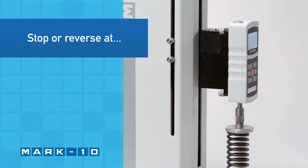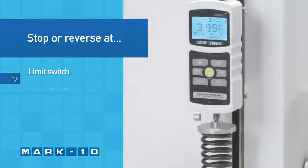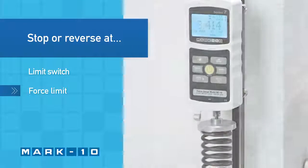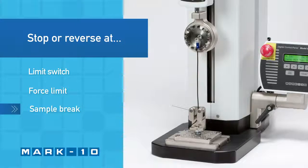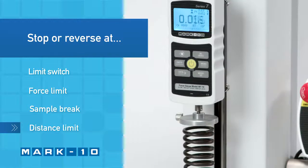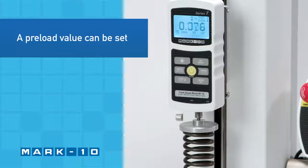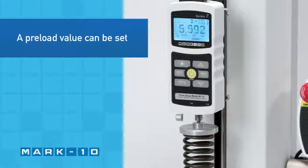The test stand can be configured to automatically reverse or cycle between limit switches, when reaching a force, when the sample has broken, or when a distance limit has been reached. A pre-load value can be set to automatically zero the travel display at initial sample contact.